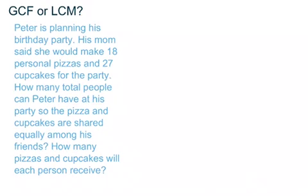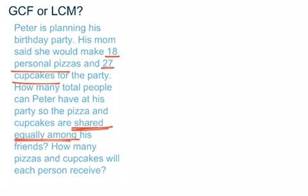Let's take a look at another example. Peter is planning his birthday party. His mom said she would make 18 personal pizzas and 27 cupcakes. How many total people can Peter have at his party so the pizza and cupcakes are shared equally among his friends? How many pizzas and cupcakes will each person receive? This is a two-part question. The key phrase here is 'shared equally,' which tells us we're going to use GCF.